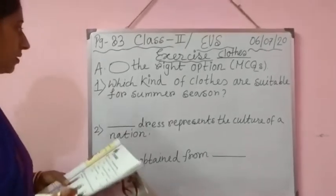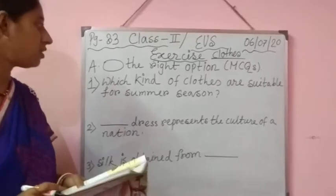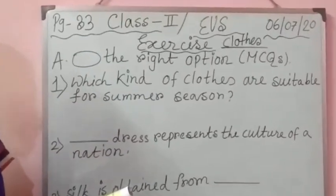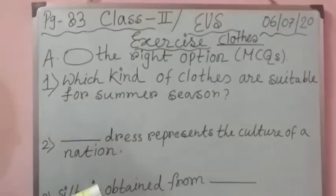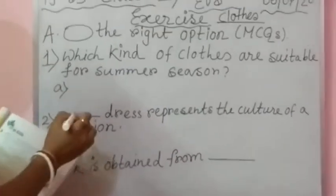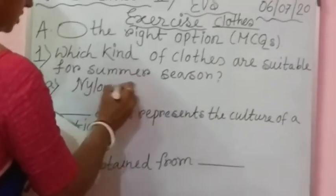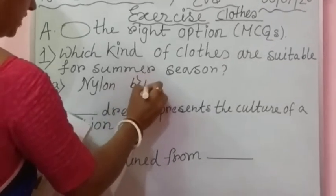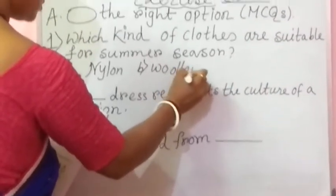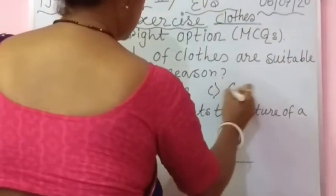Question number 1: Which kind of clothes are suitable for summer season? Options: A. Nylon, B. Pulling, C. Button.